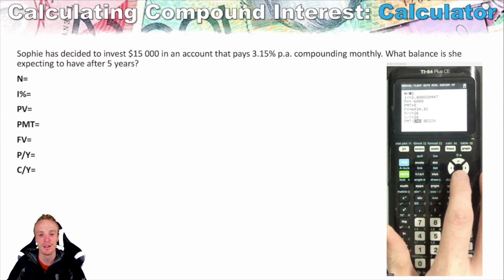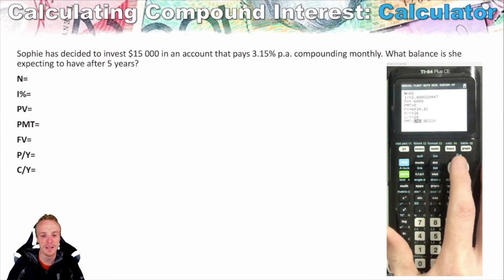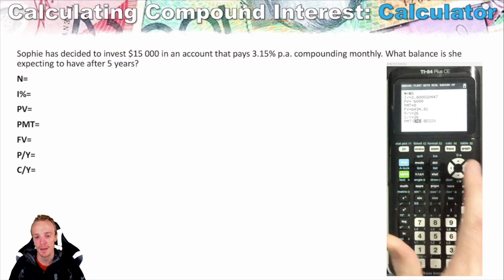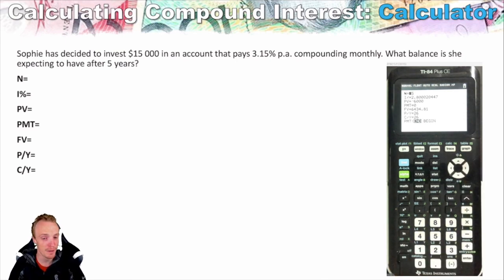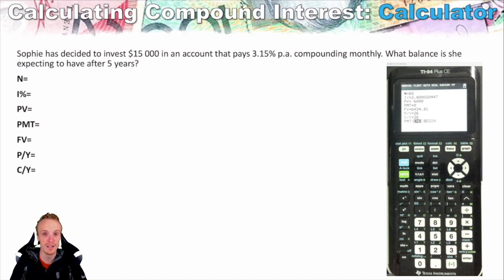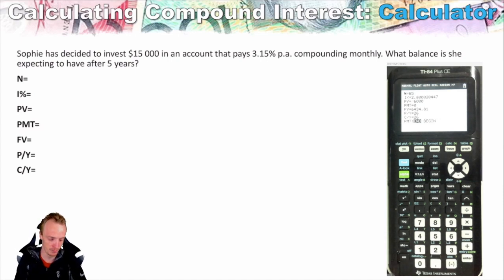We have N, I%, PV, PMT, FV, P/Y, and C/Y. All these things represent something different, and I'm first going to quickly go through what each of these represents, because that's something that's really, really important to understand.